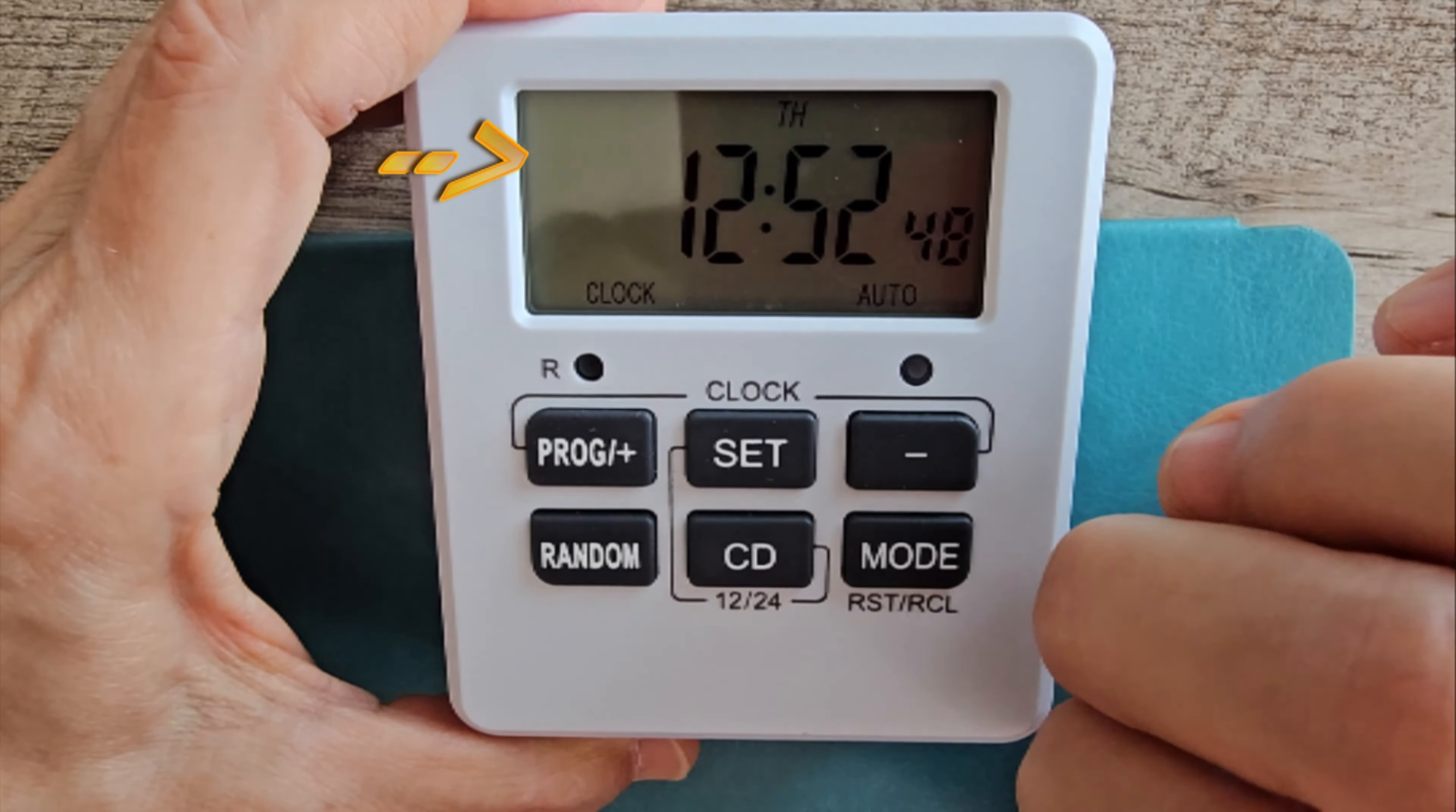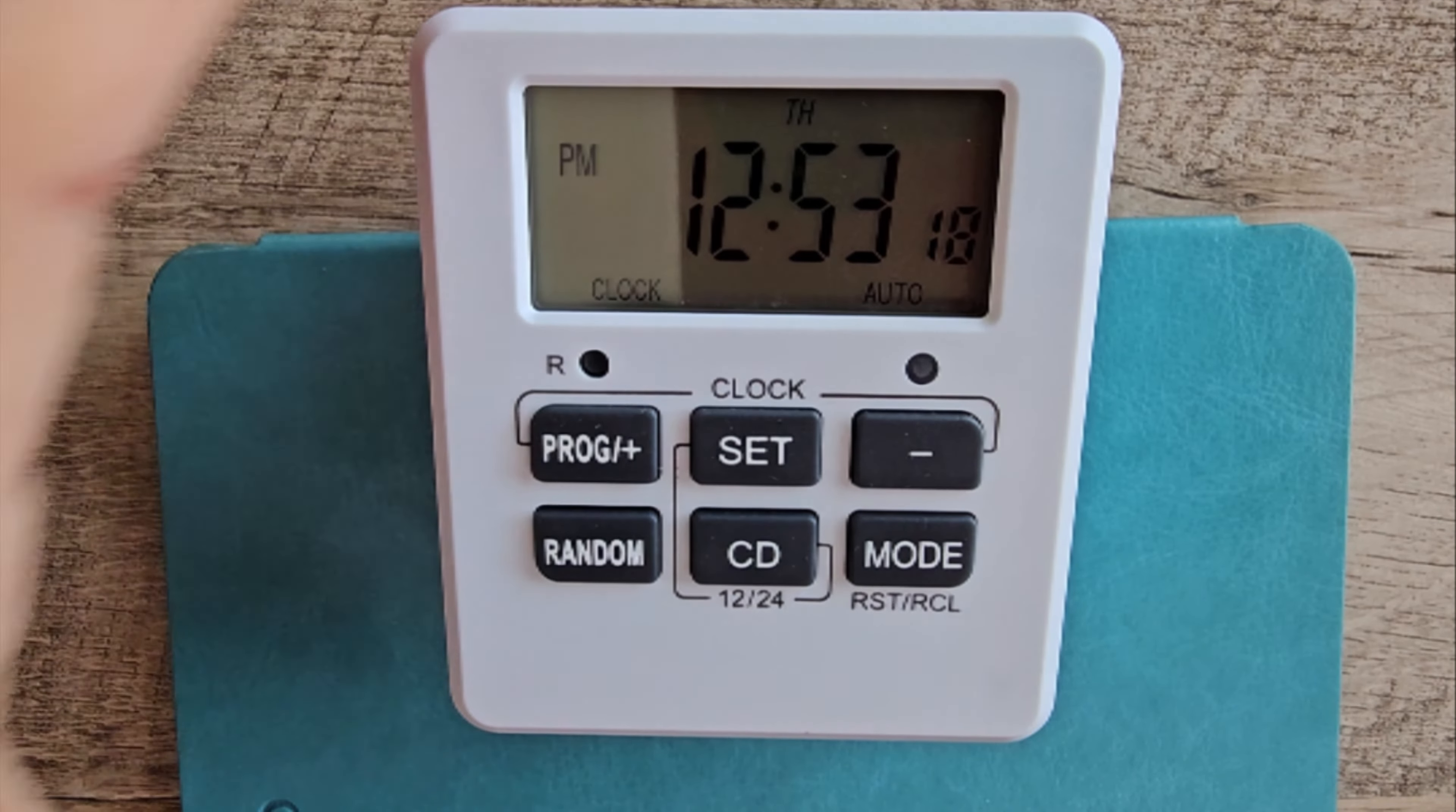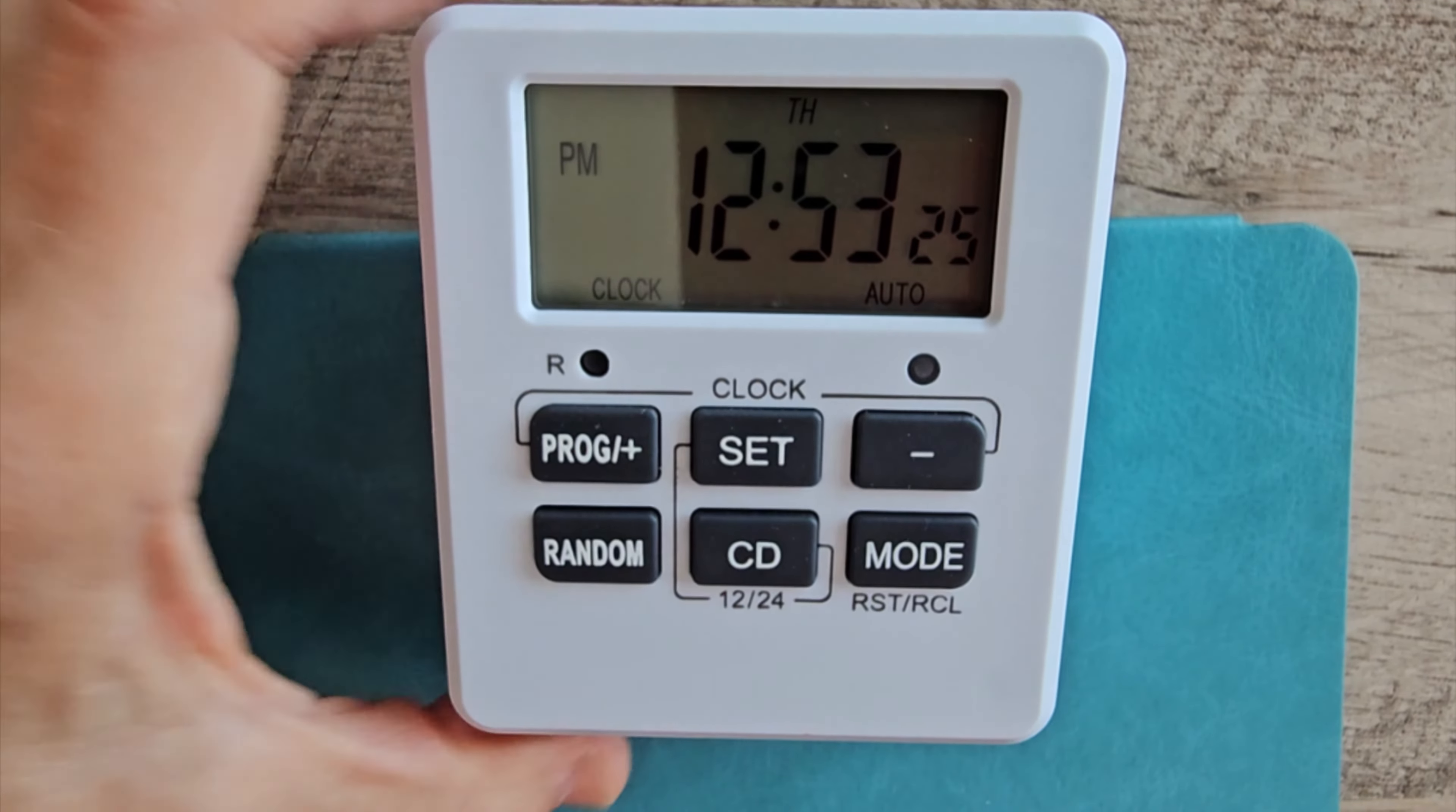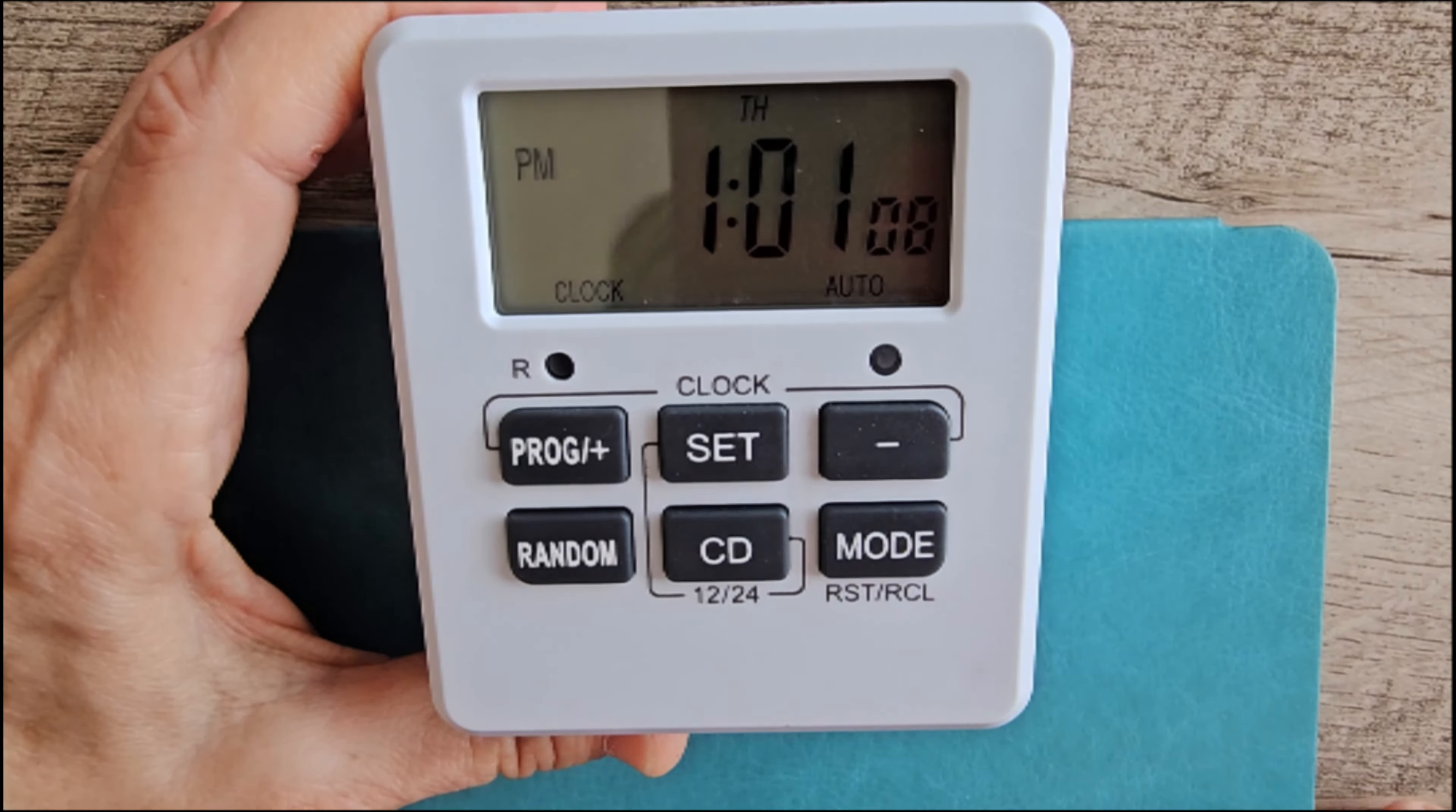To switch it from 12-hour time to military 24-hour time, hold and press the set and CD buttons together. See? The PM disappeared. That means it's in 24-hour time. To switch back to 12-hour time, just do it again. Press the set and CD buttons together. And we're back to 12-hour time.